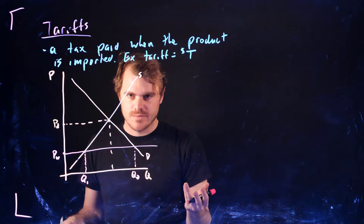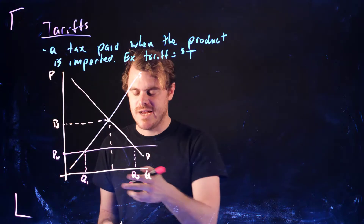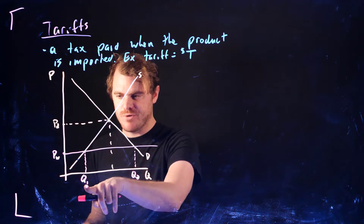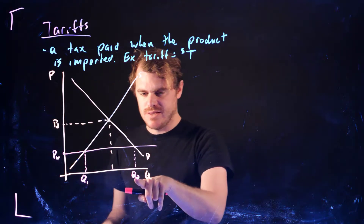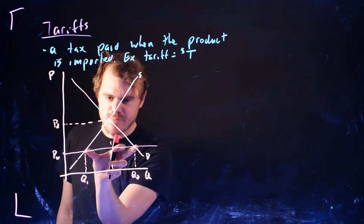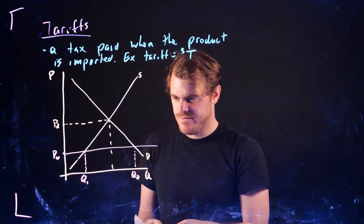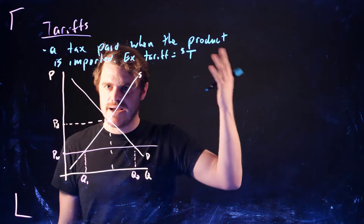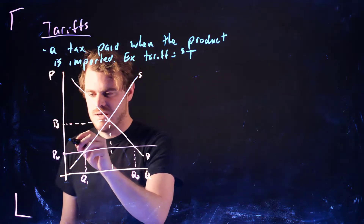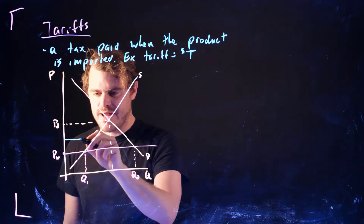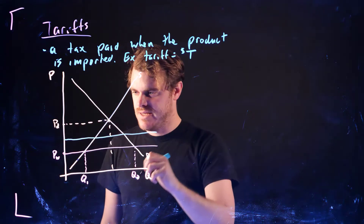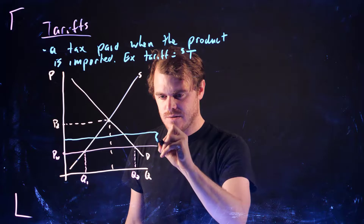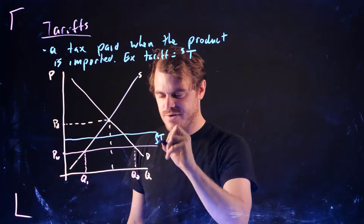Before this tariff, this is Q1 and this is Q2, just like before. So without the tariff, Q1 is how much Canadian producers produce, Q2 is how much Canadian consumers demand, and the difference is the amount of imports. But then let's say the Canadian government decides to impose this tariff of T dollars, which is going to raise the price.